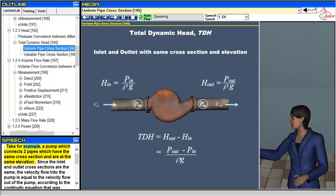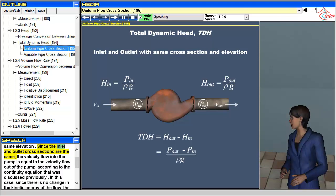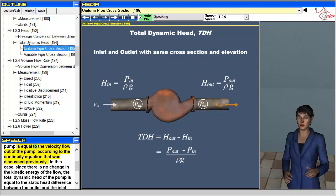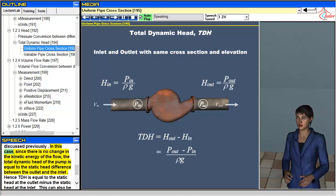Take for example, a pump which connects two pipes which have the same cross section and are at the same elevation. Since the inlet and outlet cross sections are the same, the velocity flow into the pump is equal to the velocity flow out of the pump, according to the continuity equation that was discussed previously.